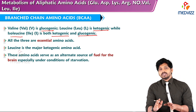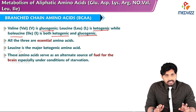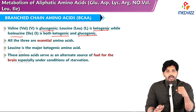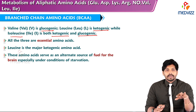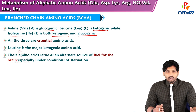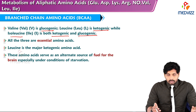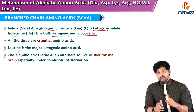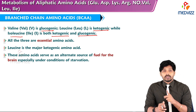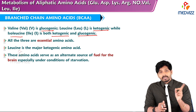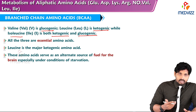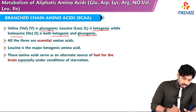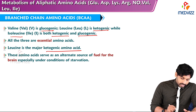So there are three variations among the three branched chain amino acids. Valine is glucogenic and leucine is ketogenic. Leucine and lysine both are ketogenic, and isoleucine is both ketogenic and glucogenic. Note that lysine is a basic amino acid, not a branched chain amino acid. All three branched chain amino acids are essential, and leucine is the major ketogenic amino acid.